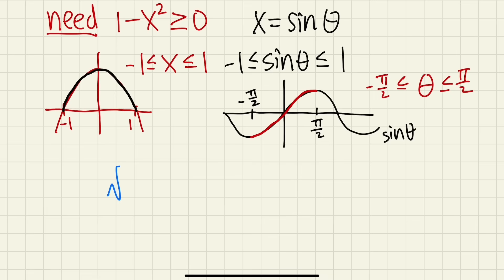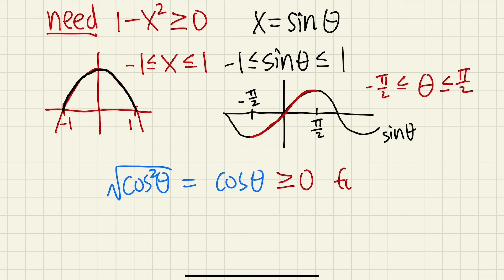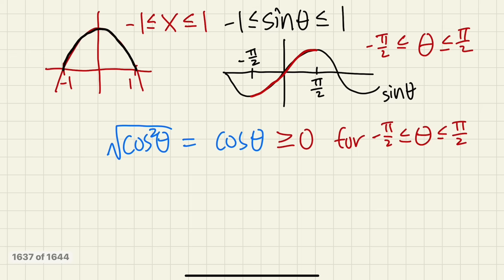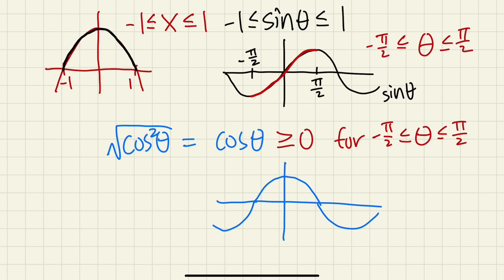Now, we were talking about square root of cosine squared theta equaling just cosine theta. The key is that cosine theta is greater than or equal to zero for theta between negative pi over 2 and positive pi over 2. Looking at the graph of cosine theta, from negative pi over 2 to positive pi over 2, cosine is non-negative. That's the reason we don't need the absolute value. The same situation applies for other substitutions — we just restrict the theta values to make sense of why we don't need the absolute value.